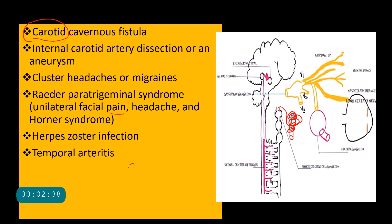Cavernous sinus thrombosis can also affect the sympathetic chain as it passes along the internal carotid artery through the lateral wall of the cavernous sinus, causing Horner's syndrome. If a patient presents with a painful Horner's syndrome, the two key conditions to consider are carotid artery dissection and cavernous sinus thrombosis.